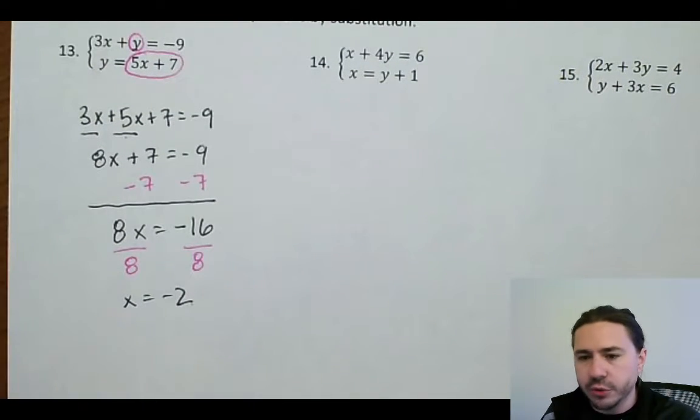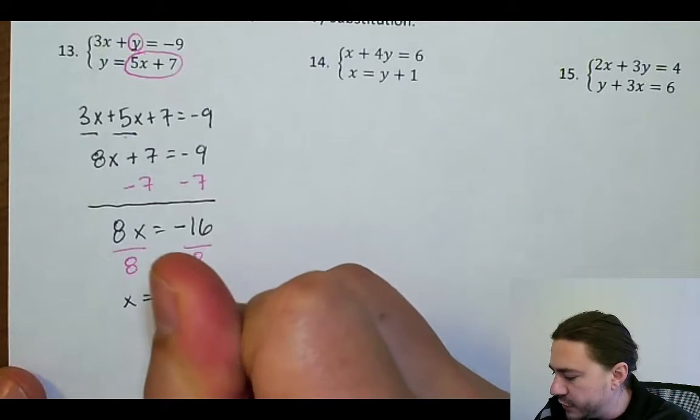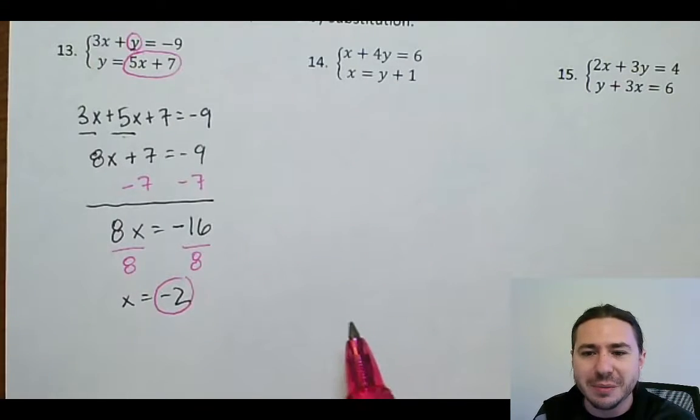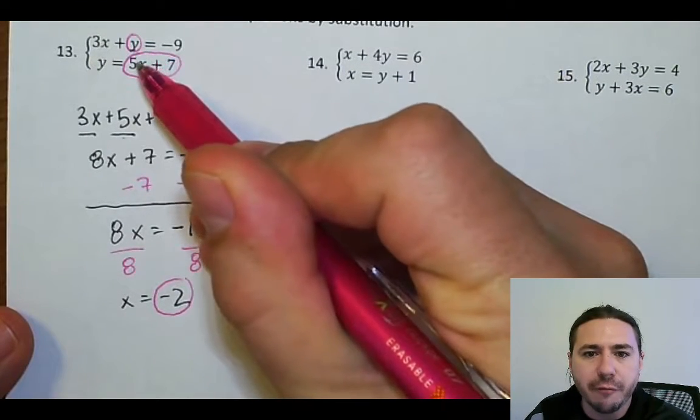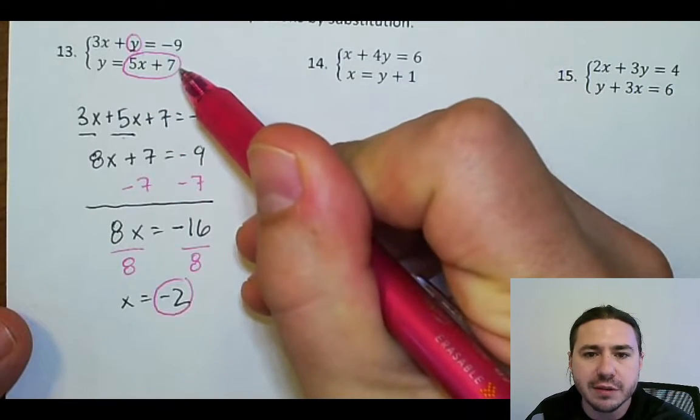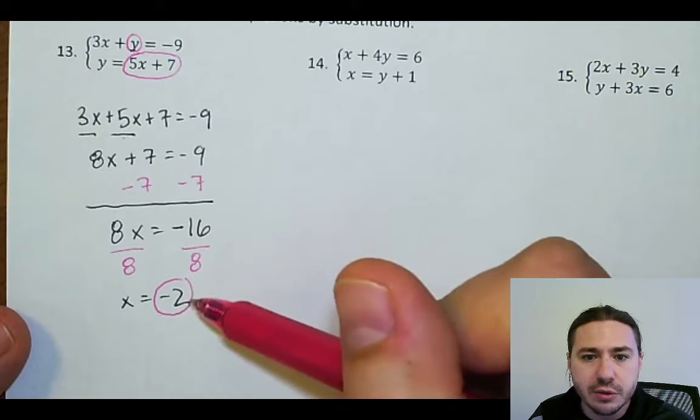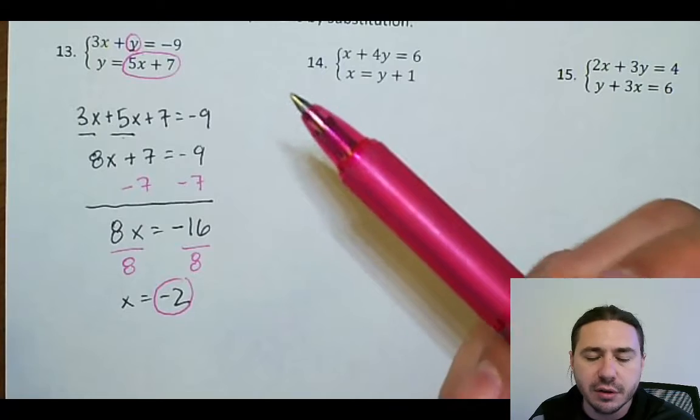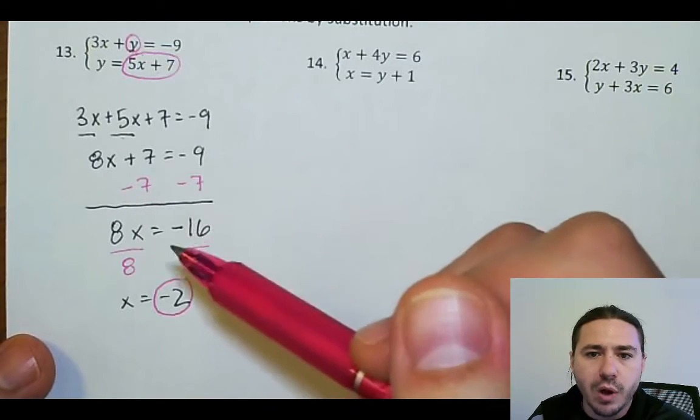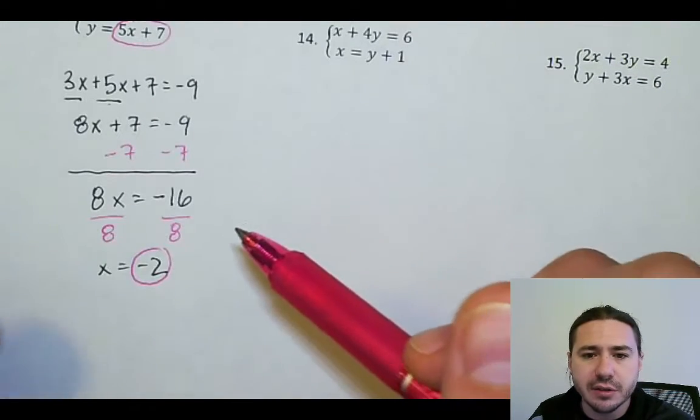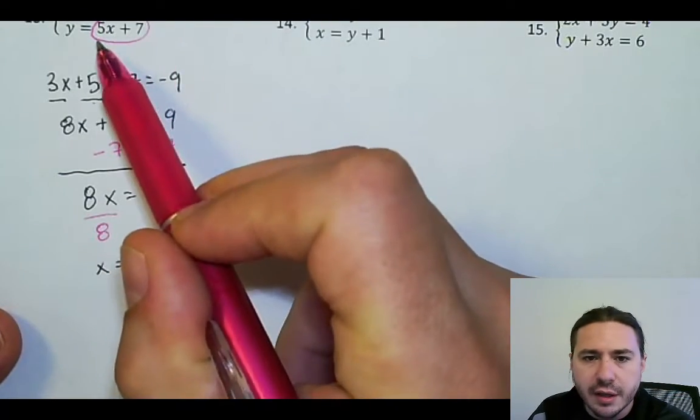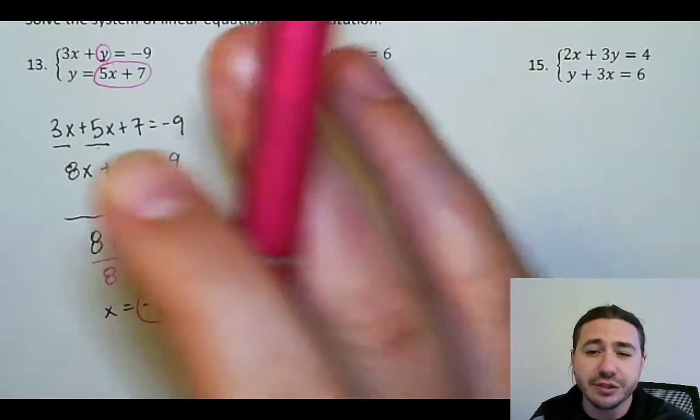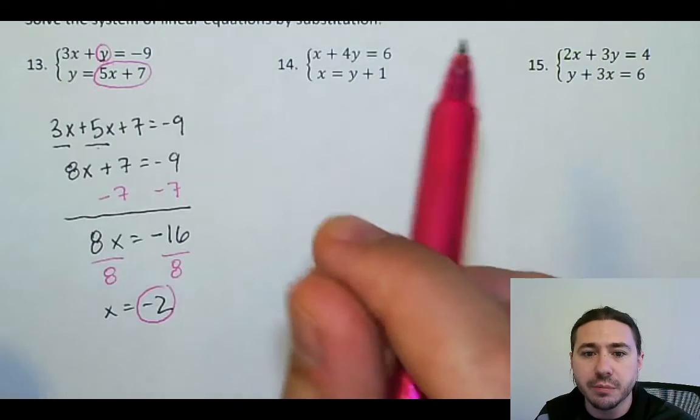So to do that, I'm going to substitute again. The whole reason why this method is called substitution is because of literally all the substituting you're doing. We do one substitution up front where we substitute y for 5x plus 7. And we're going to do another substitution where we're going to substitute negative 2 in for x. Now, it doesn't really matter which equation you plug it into. You'll get the correct answer either way. But you want to pick one that you feel like is going to be a little bit easier to deal with. And in general, it's usually a good idea to plug it into the one where you have the y that you're looking for isolated so you don't have to actually solve anything. You just have to compute a value.